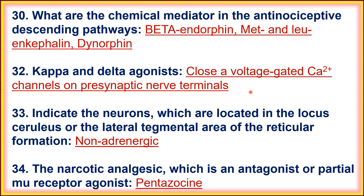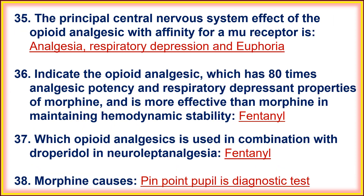The neurons located in the locus ceruleus or the lateral tegmental area of the reticular formation are noradrenergic. The narcotic analgesic which is an antagonist or partial mu receptor antagonist is pentazocin. The principal central nervous system effects of opioid analgesic with affinity for the mu receptor are analgesia, respiratory depression, and euphoria.